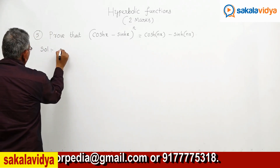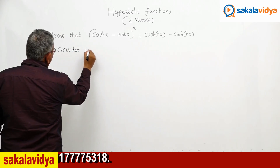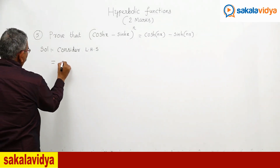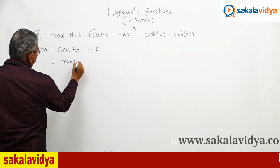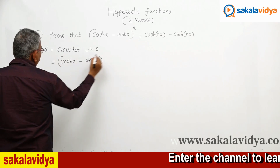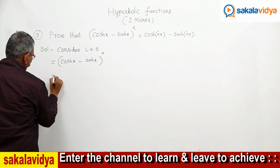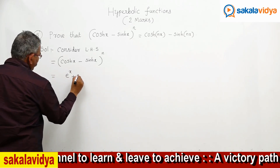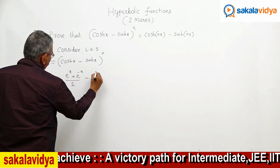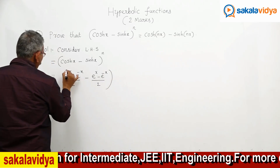First, consider the LHS. LHS equals (cosh x - sinh x)^n. Let us replace the cosh x value. That is nothing but (e^x + e^(-x))/2 minus (e^x - e^(-x))/2, all raised to the power n.